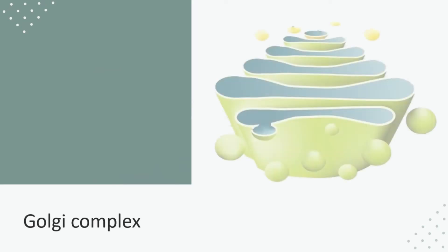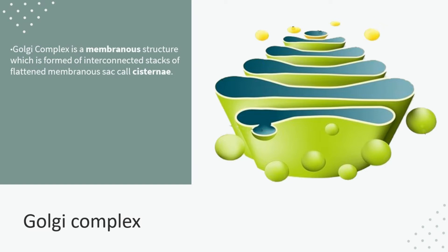Let's see the structure of the Golgi apparatus. The Golgi apparatus is a membranous structure which is formed of interconnected stacks of flattened membrane sacs called cisternae. Here in the figure we can see the green-colored cisternae.